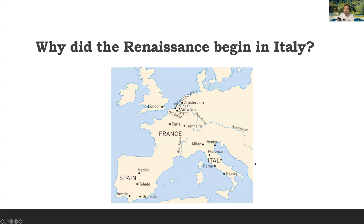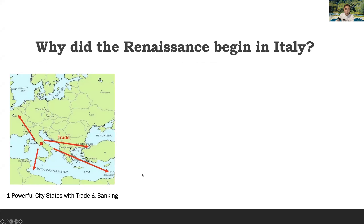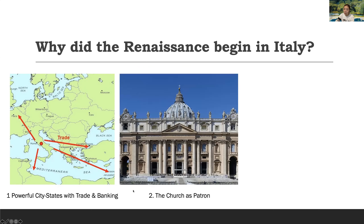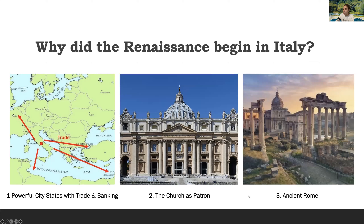We learned the reason why the Renaissance began in Italy. The first reason was the powerful city states with trade and banking — they had a very strong economy to develop the culture. The second reason was the church — they were the patron for artists. And the last reason was ancient Rome.